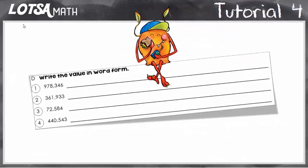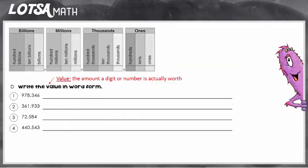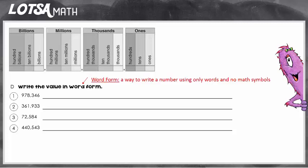For these types of problems, you have to write the value in word form. So let's look at the directions. Write the value — and remember, the value is the amount a digit or number is actually worth — in word form. Word form is a way to write a number using only words and no math symbols.